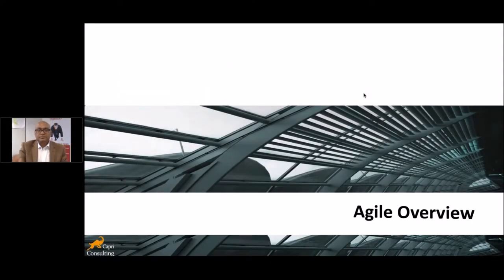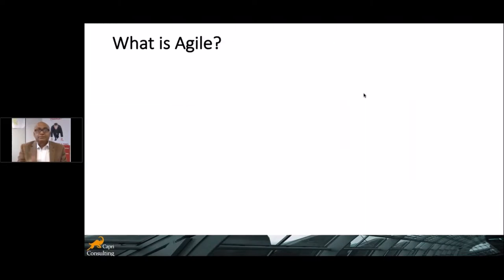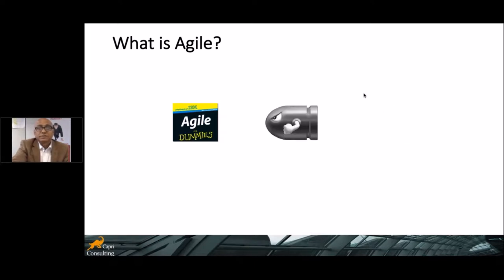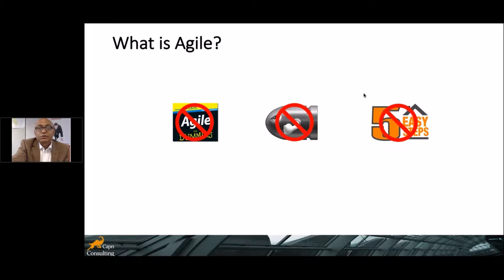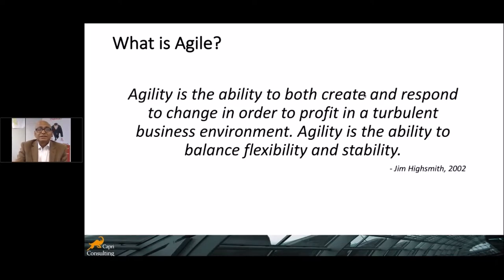A bit of agile overview. So what is agile? Is it for dummy? Has it got a silver bullet which will fix your problem? Are there five easy steps to learn and implement agile? I think you're wrong. Agility is the ability to both create and respond to change in order to profit in a turbulent environment. Agility is the ability to balance flexibility and stability — achieving agility while maintaining stability.